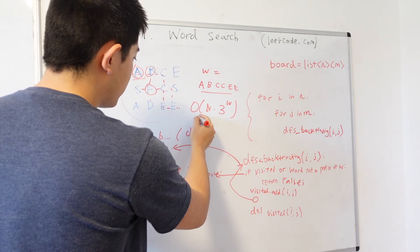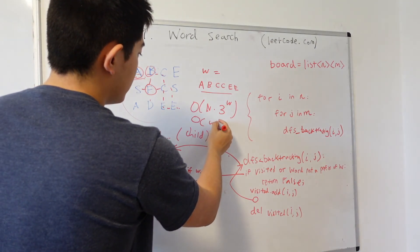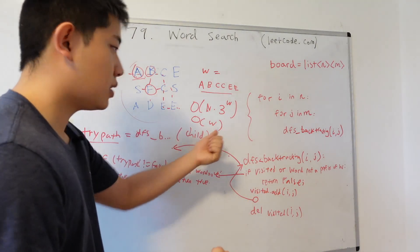And in terms of space complexity, we would only need to store the path length. So big O of W here as well.